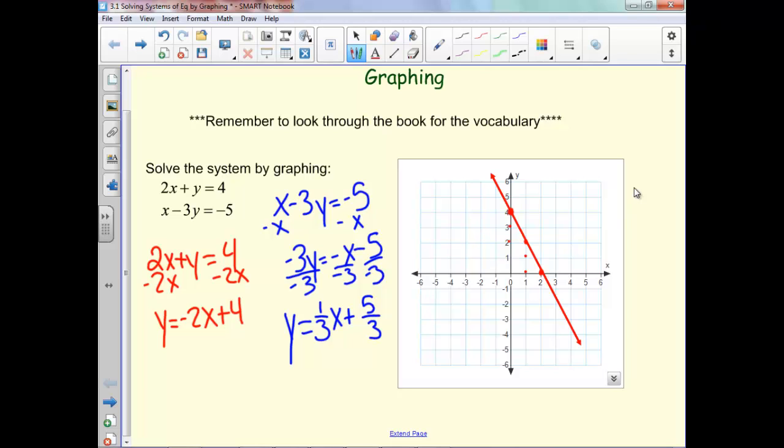But remember 5 thirds is the same as 1 and 2 thirds. And so now we're going to graph that by going up 1 and 2 thirds, and then up 1 over 3.